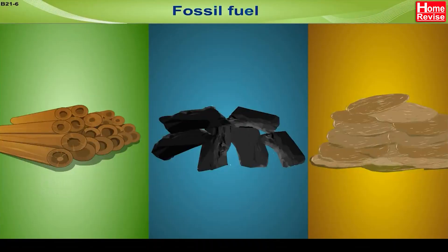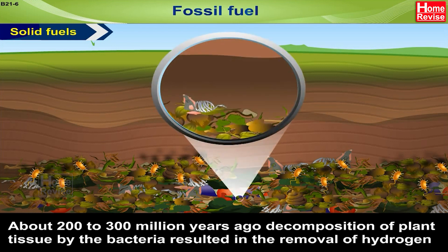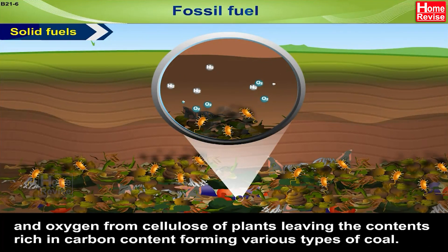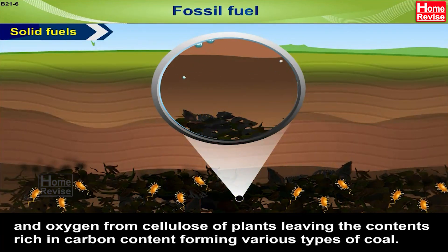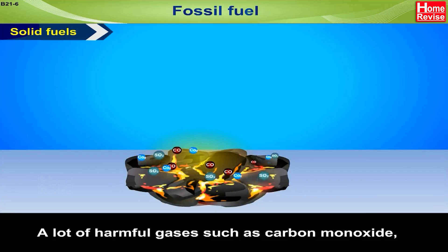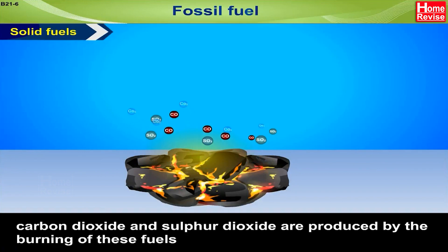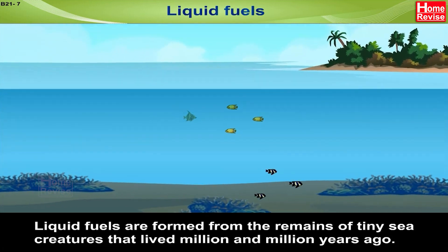Fossil fuels — Solid fuels. About 200 to 300 million years ago, decomposition of plant tissue by bacteria resulted in the removal of hydrogen and oxygen from the cellulose of plants, leaving the contents rich in carbon, forming various types of coal. This process is called carbonization. A lot of harmful gases such as carbon monoxide, carbon dioxide and sulfur dioxide are produced by the burning of these fuels.